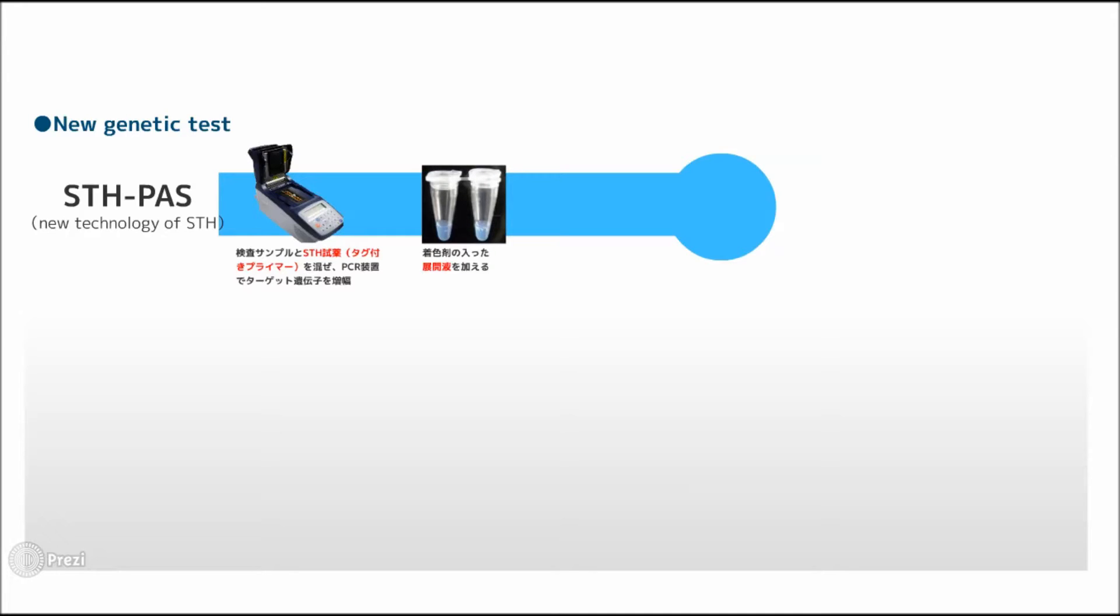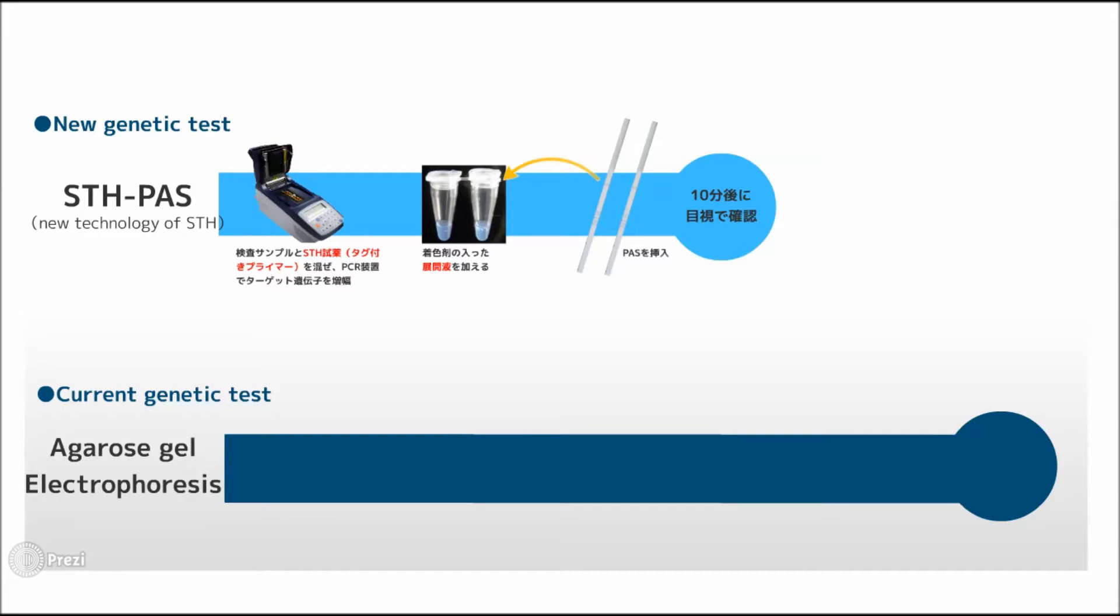After amplification, we add developer with the latex bead color agent and insert Pass. Ten minutes later, visual confirmation is possible using the STH method.